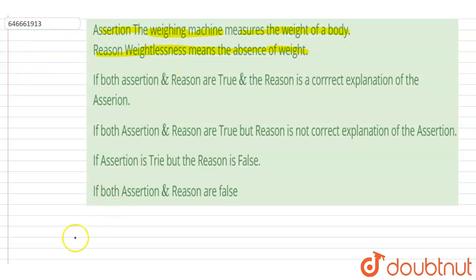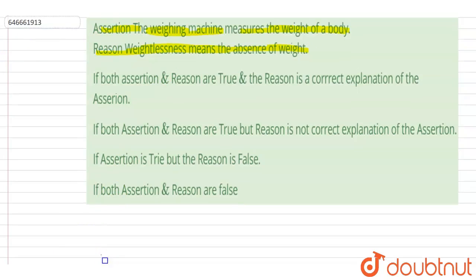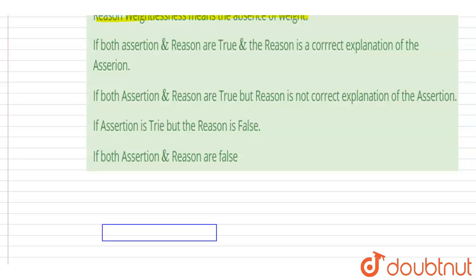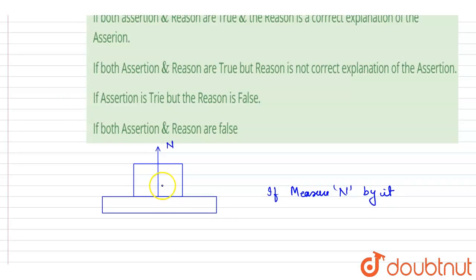If I talk about the weighing machine, let's say this is the weighing machine. It measures the normal reaction. Let's say I kept an object on it - whatever normal reaction is being applied by this weighing machine, that is being measured by it. So it measures the normal reaction. If it is not moving and is just kept horizontally, then